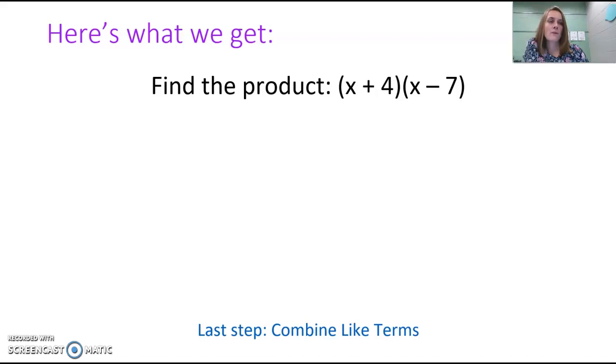Find the product of the quantity x plus 4 times the quantity x minus 7. If we use FOIL, which is really just repeated distributive property...